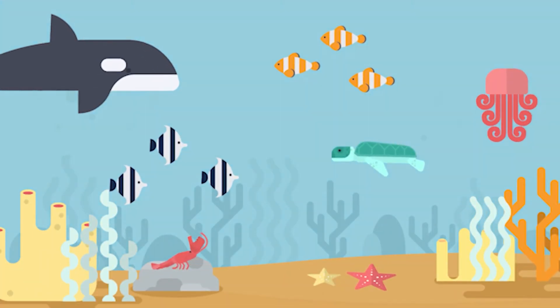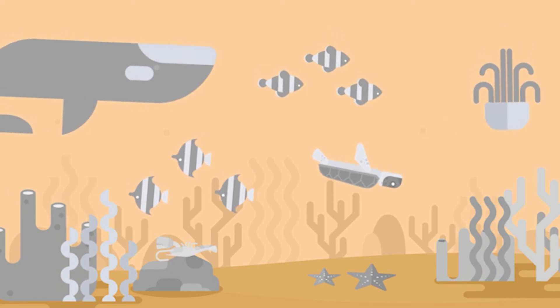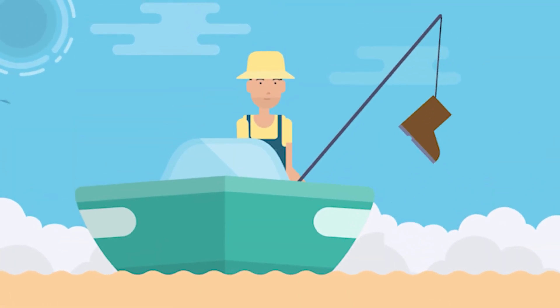And the change in the temperature also impacts the sea, killing marine life and affecting at least 1 billion people who rely on the sea for their protein source.